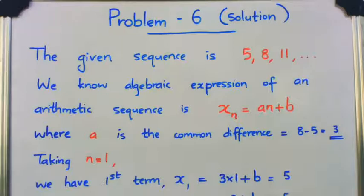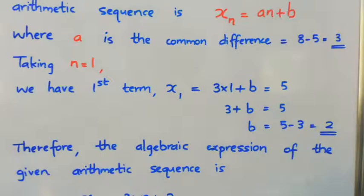Here a is the common difference, which is equal to 8 minus 5, which equals 3. We need to find the value of b. Let's take n = 1 in the algebraic expression.